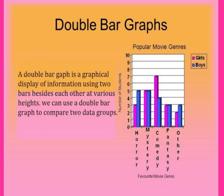Next, double bar graphs. A double bar graph is a graphical display of information using two bars beside each other at various heights. We can use a double bar graph to compare two data groups. Like the bar graph, the vertical axis and the horizontal axis should be labeled and scaled appropriately.